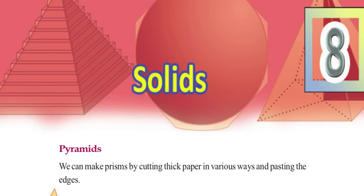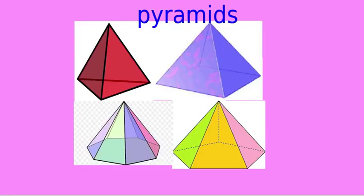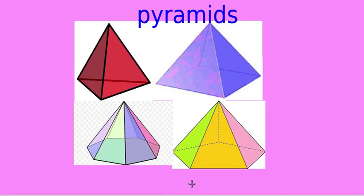Pyramids. These are some examples of pyramids. The first one is a triangular pyramid. This is a square pyramid, pentagonal pyramid, and hexagonal pyramid.